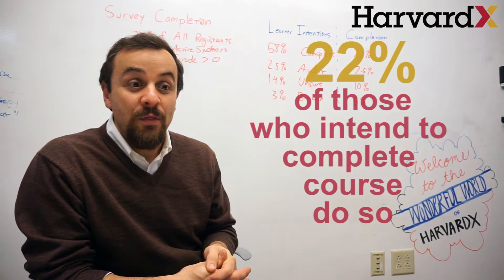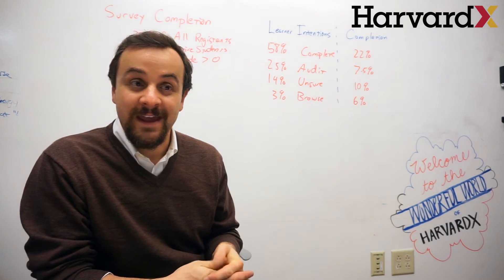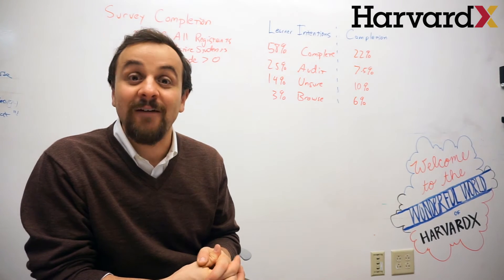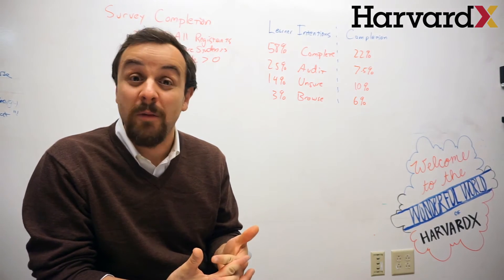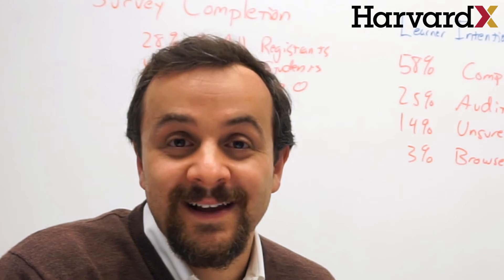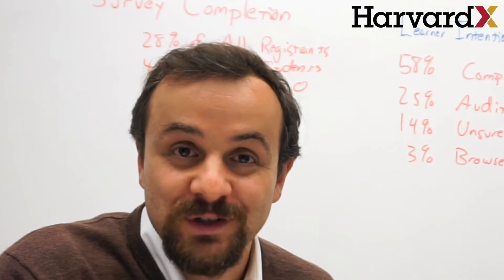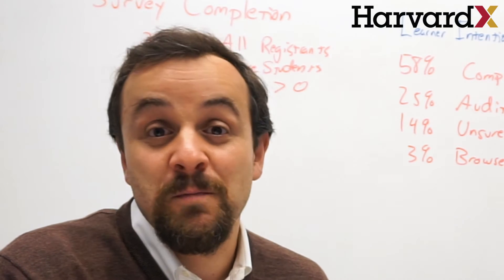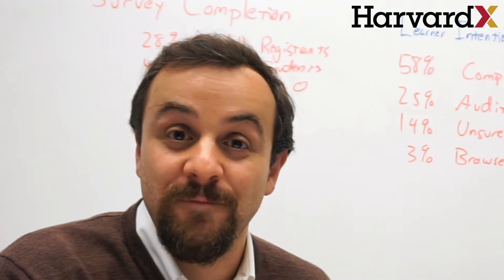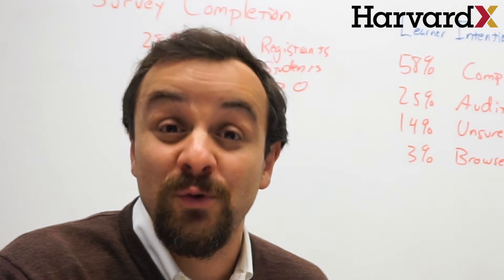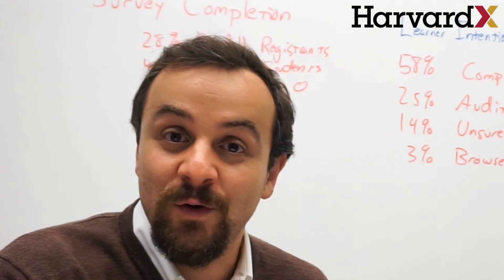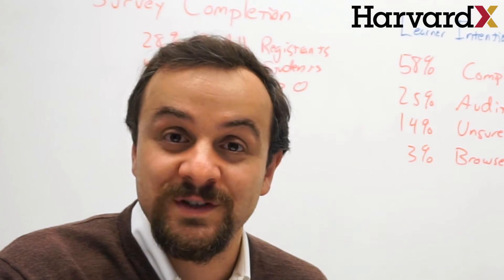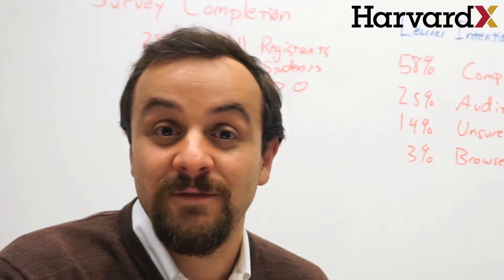That's helpful in interpreting the impact that our courses are having and setting a benchmark. There are three things that instructional designers, course faculty, and course teams can take away from this research. The first is just maybe a more useful benchmark for completion rates. Of the people who intended to complete the course across nine different courses, on average we had about 22% of those people who ended up finishing a course.